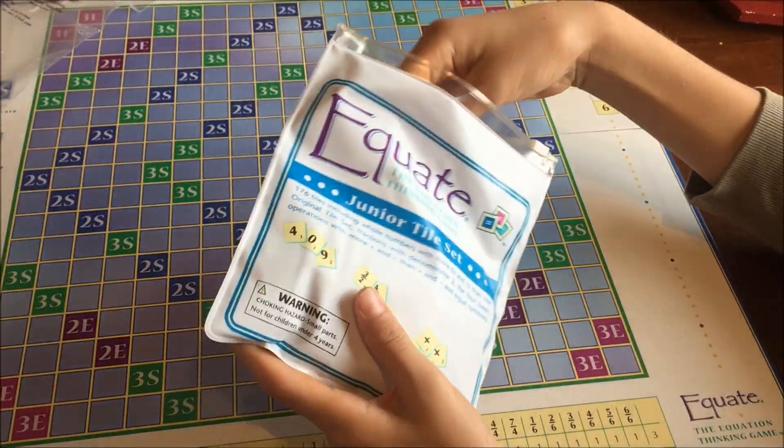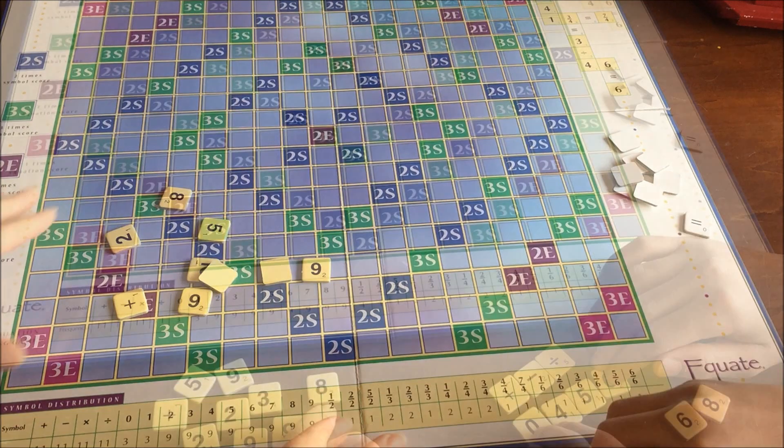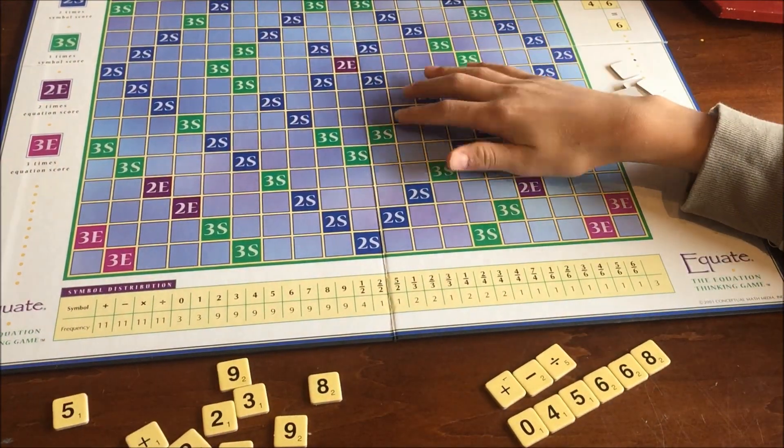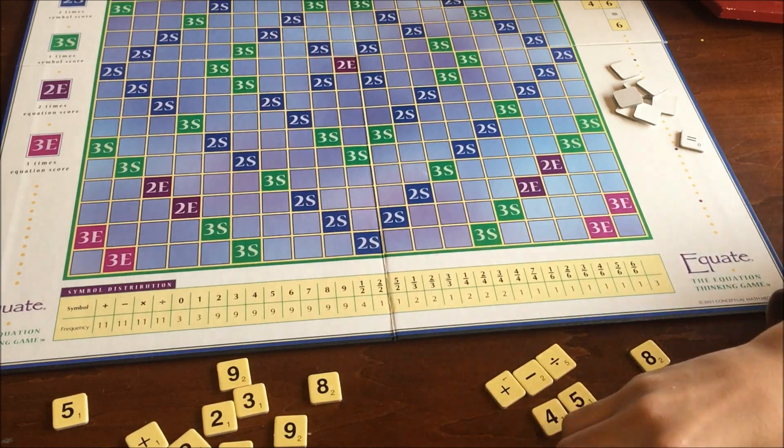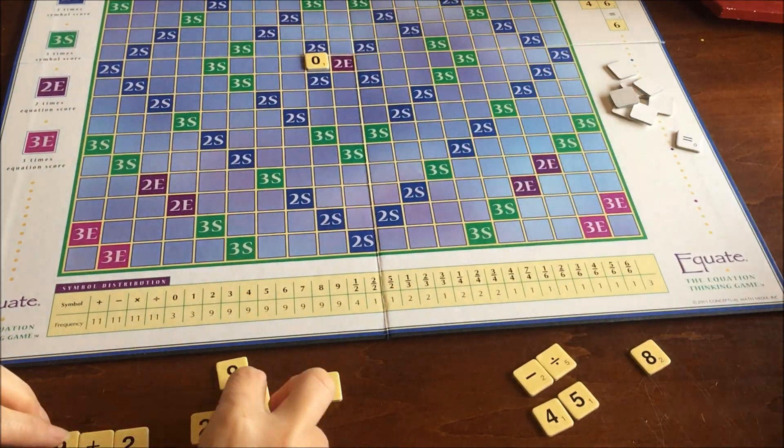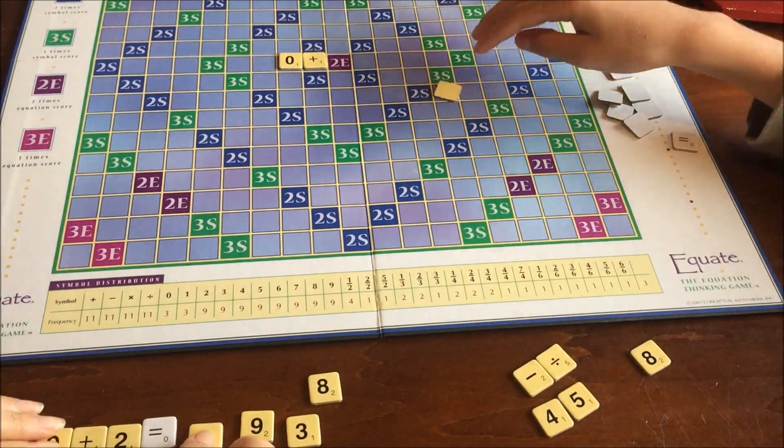You want to start out by distributing 9 tiles per player and whoever draws the highest tile number will be the first player. My son who's in eighth grade is going first and whoever goes first always doubles their score.